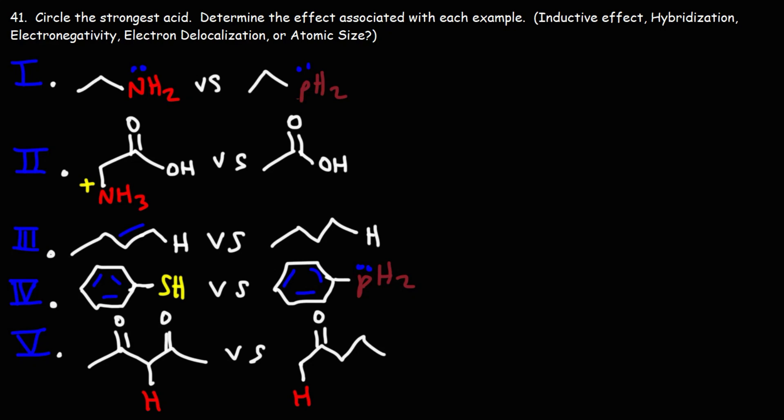Circle the strongest acid. Determine the effect associated with each example. Think about why one molecule is stronger in acidity than the other molecule. Is it because of the inductive effect, hybridization, electronegativity, electron delocalization, or atomic size?